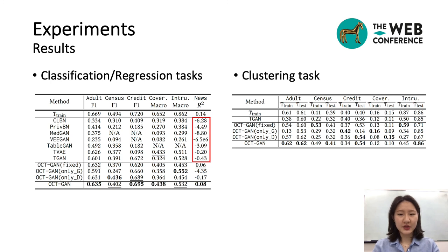While all baselines show negative R-square scores, which is unfitted for a regression task, OCTGAN achieved positive R-square score. I summarized the results for clustering task by the top two models and OCTGAN outperforms in almost all cases.